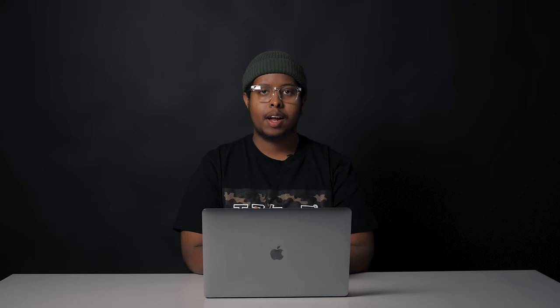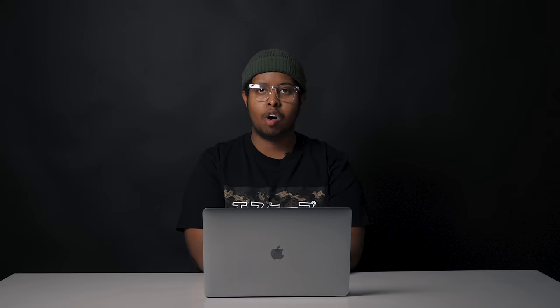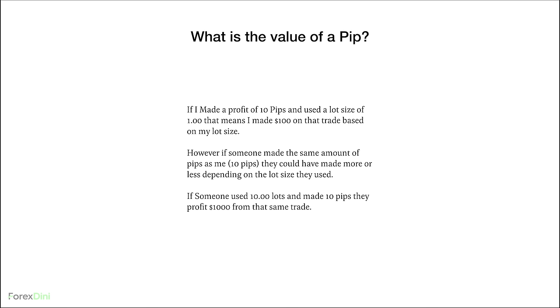Now that we know what a pip and pipette is, how do we know the value of a pip? The value of a pip is determined by the lot size you use. For example, if I made a profit of 10 pips and used a lot size of 1.00, that means I made $100 on that trade. However, if someone used 10 lots (10.00) and made the same 10 pips, they would profit $1,000 from that same trade.